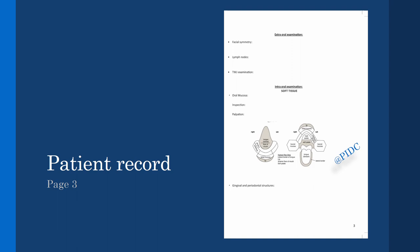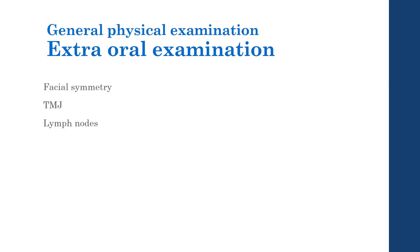We now come to the examination part of the patient record, having covered the entire history. Examination is generally divided into general physical examination, extraoral examination, and intraoral examination. In a dental setting, the general physical examination may not be very detailed, but if a specific physical condition is noticed it should be noted as it may affect dental management. In extraoral examination, the common things noted are facial symmetry, the TMJ, and the lymph nodes.